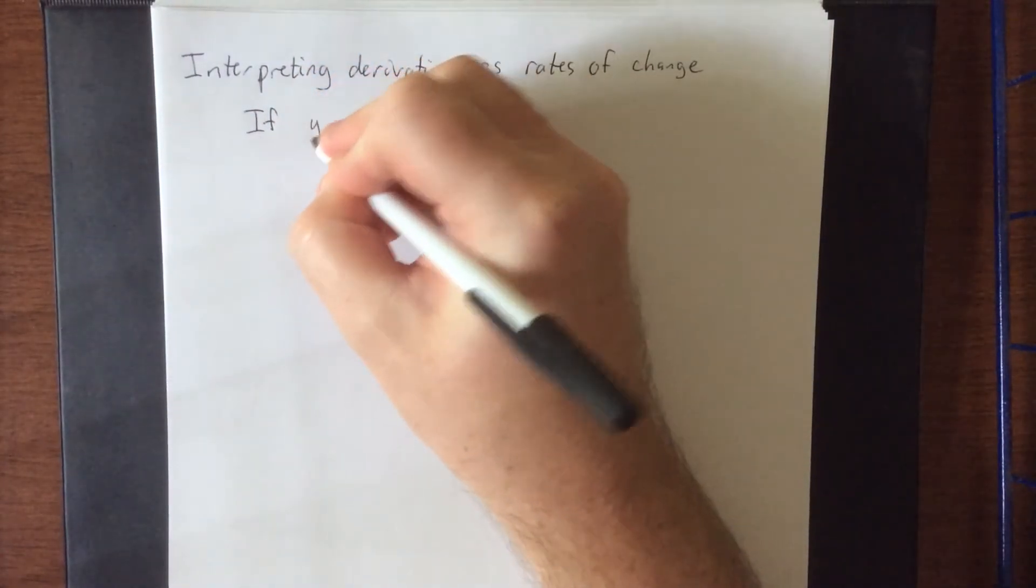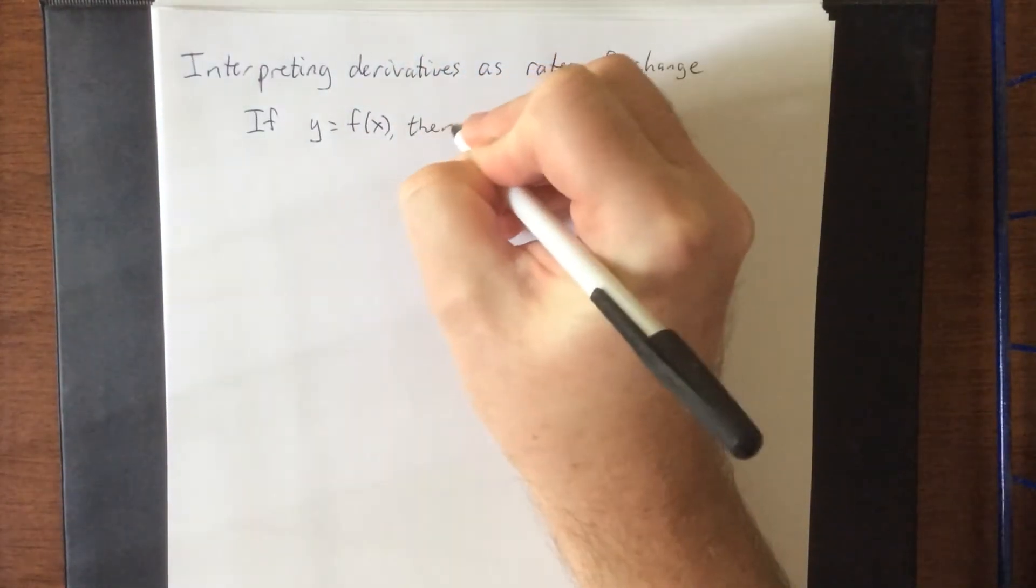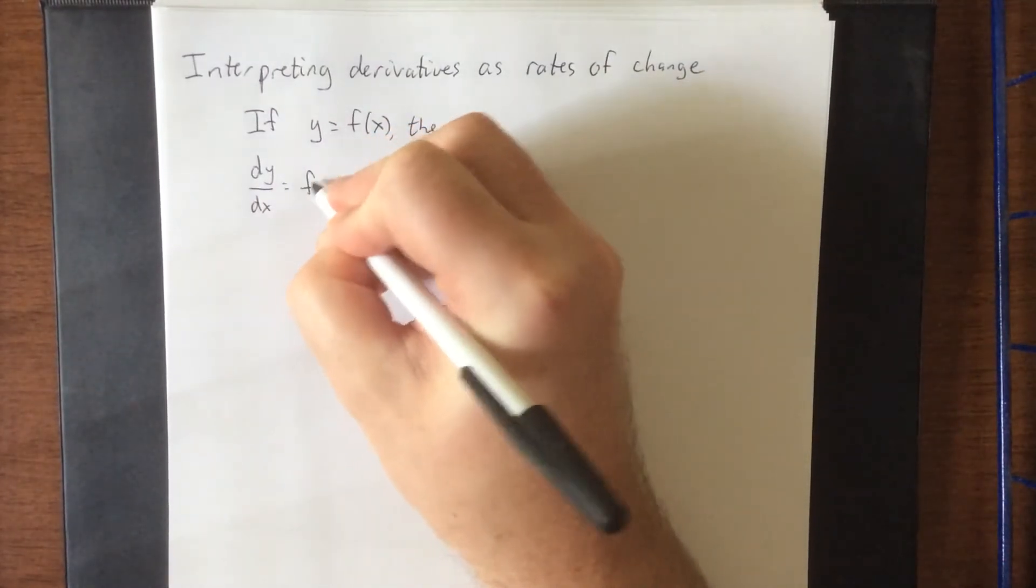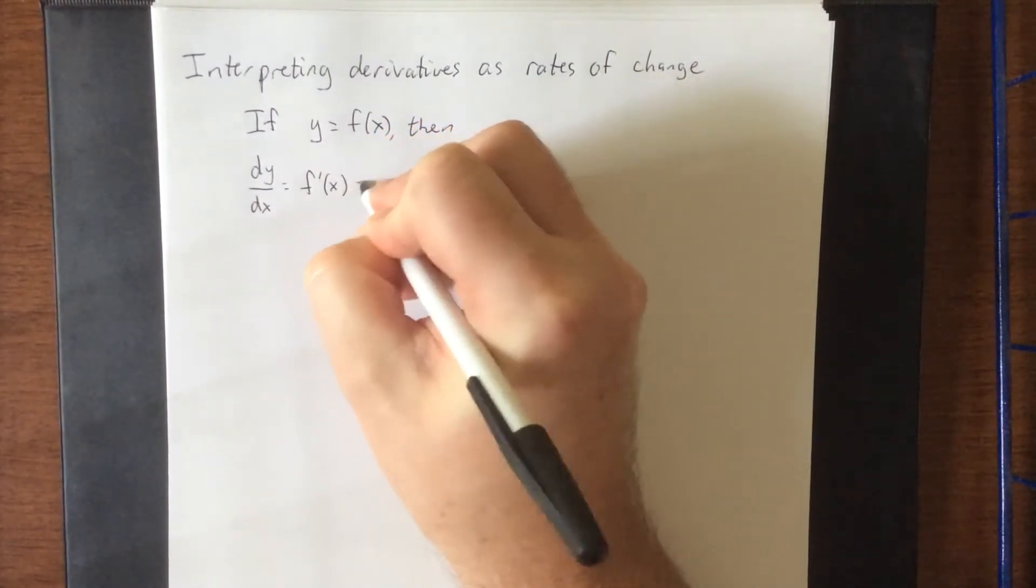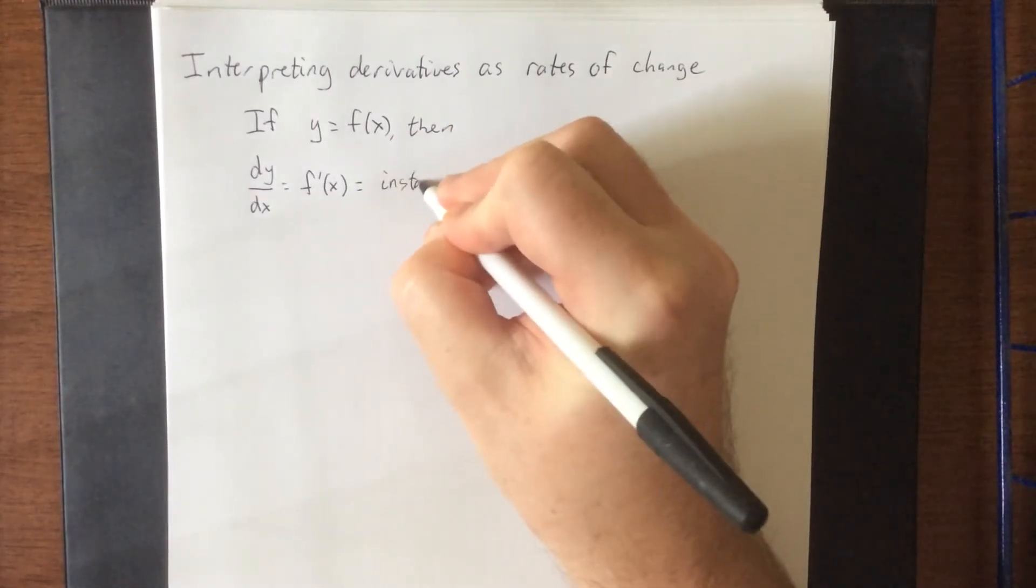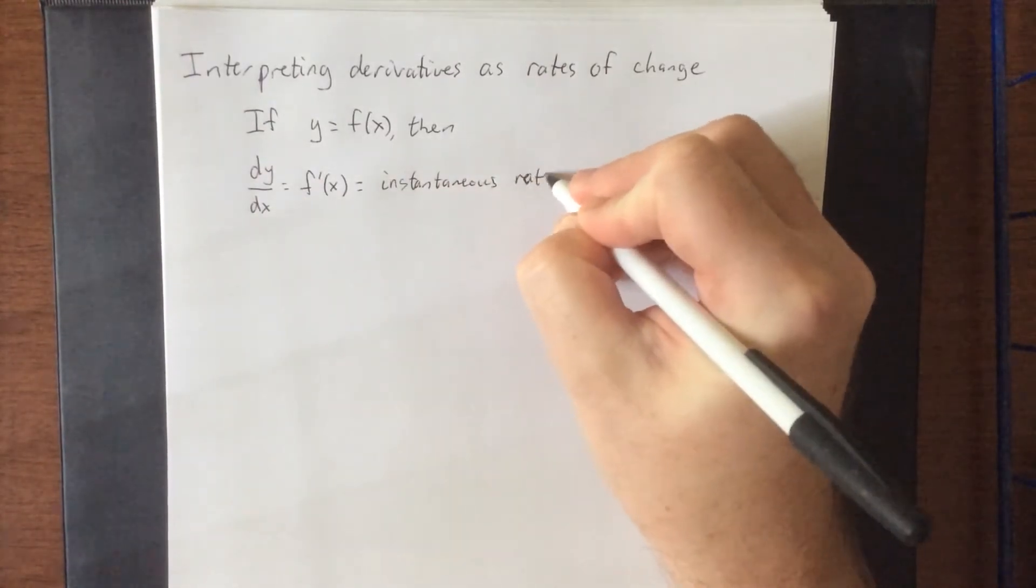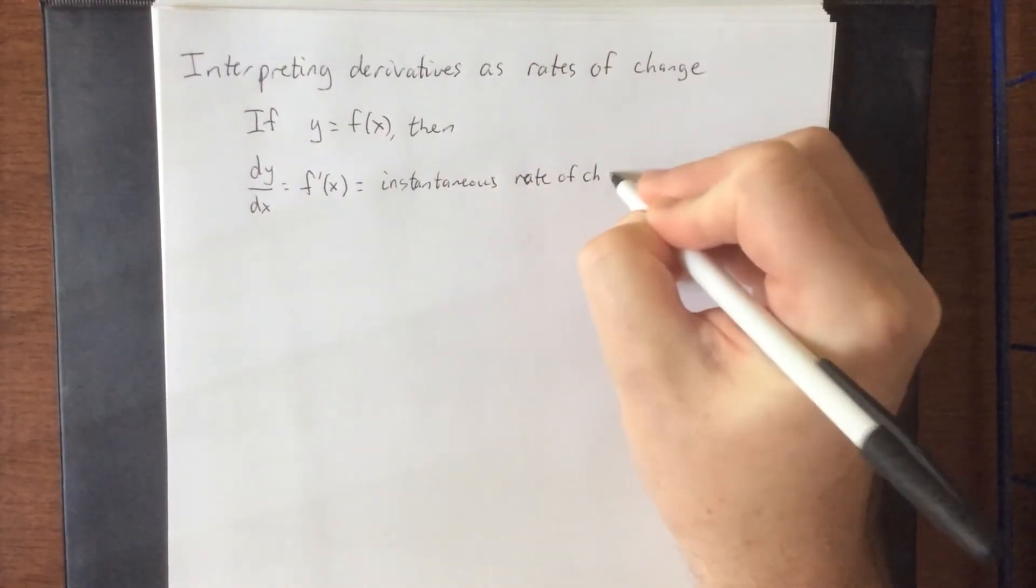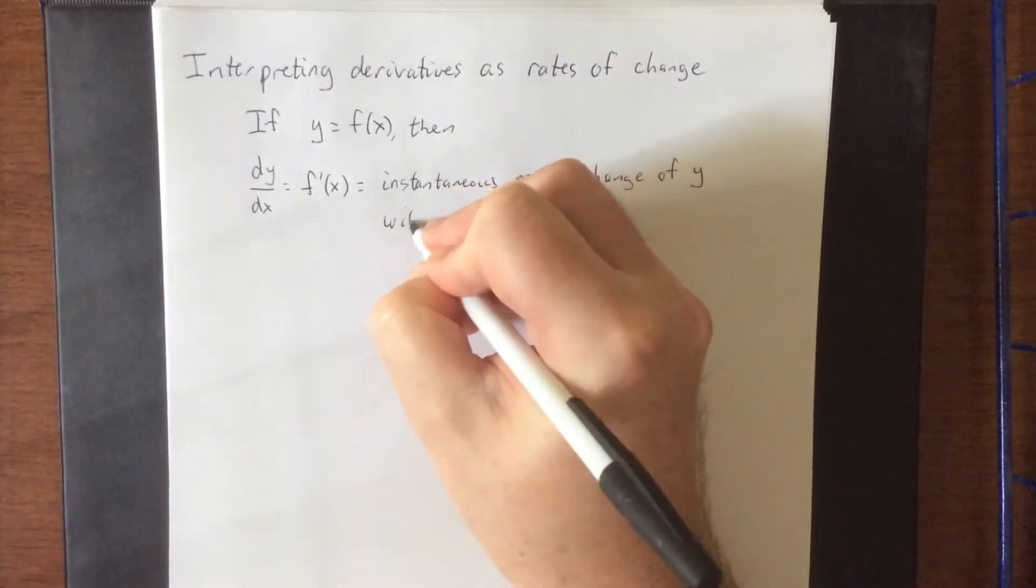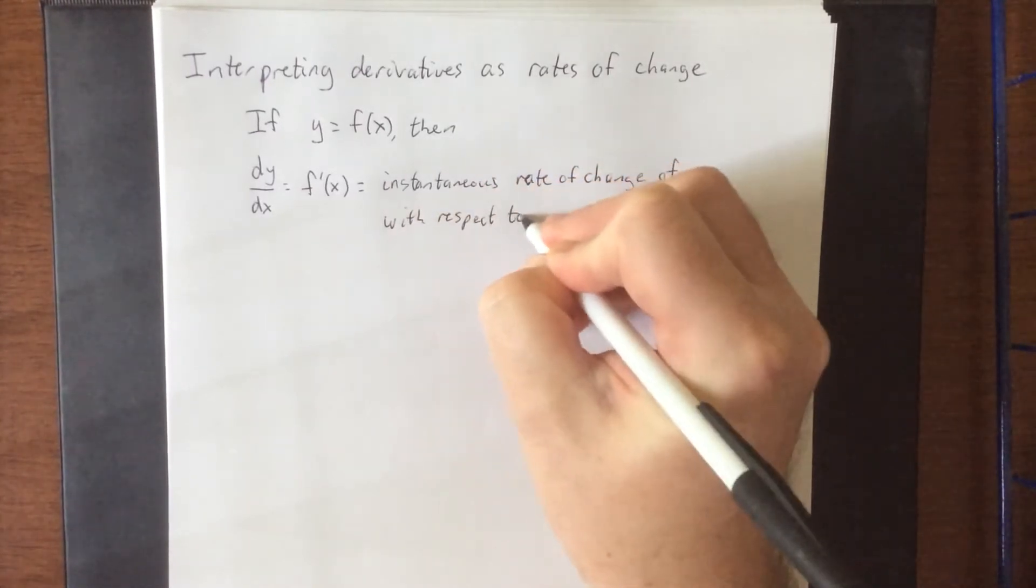So generally speaking, if y is some function of x, then the derivative in Leibniz notation would be dy over dx. Prime notation or Newton notation would be f prime of x.